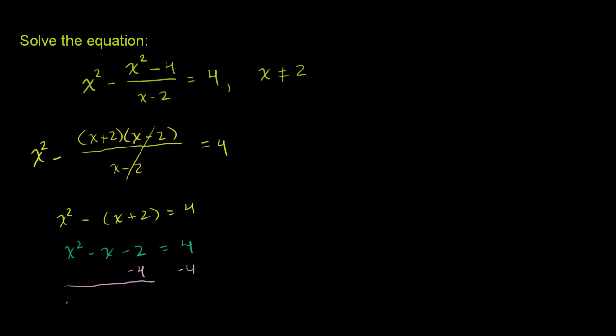And we are left with x squared minus x. Negative 2 minus 4 is negative 6. And then 4 minus 4 is 0. That was the whole point. So we have x squared minus x minus 6 is equal to 0.